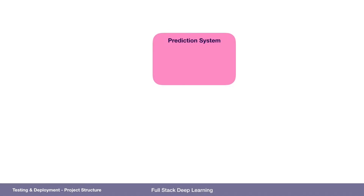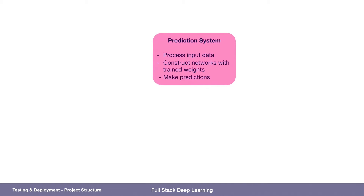Where I like to start is a conceptual framework that I think is helpful to have. The framework is: there's the prediction system. This is the model that makes predictions — it's not just the TensorFlow or PyTorch code, it's also the code around it. That includes code that processes input data for the model, the network itself with its trained weights, the ability to make predictions, and perhaps thresholding on confidence.